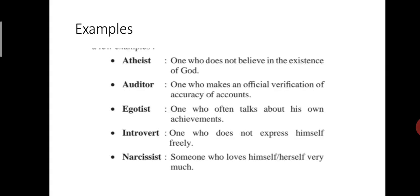From your textbook. That is first example. Atheist. One who does not believe in the existence of God. See, here is one word substitutions in which one word replaces a group of words. Next example. Auditor. One who makes an official verification of accuracy of accounts. Next example. Egoist. Egotist. Narcissist. That is one who often talks about his own achievements.